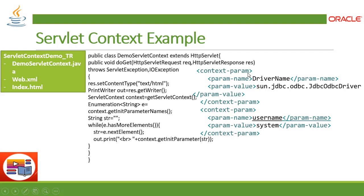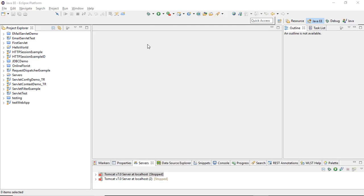As you can see in the deployment descriptor — the web.xml — it has a context-param tag. This context-param defines parameter values along with their names in a structured form. This is how values are displayed in the HTML. In the HTML I'm making a call to the servlet, and the servlet prints the values. Let's see it execute — this is the Servlet Context Demo project in Eclipse IDE.